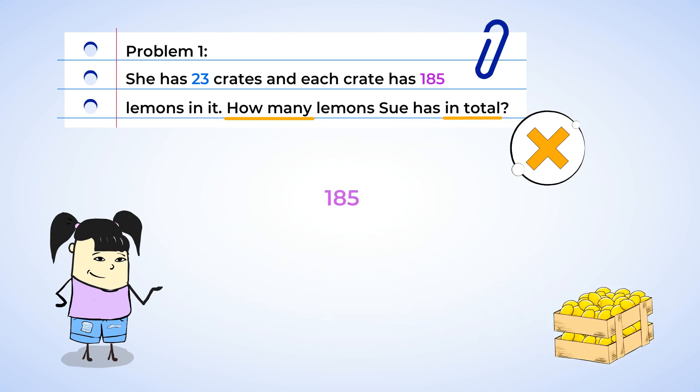We're going to have 185 and 23 lined up vertically with the place values. Now we're going to start with the 3 and multiply it by each of the digits in 185. 3 times 5? That's 15. The 5 stays, and we carry the 1 to the tens place.